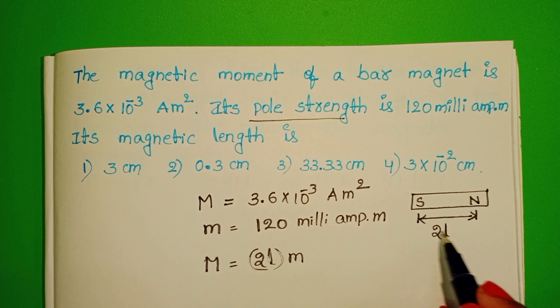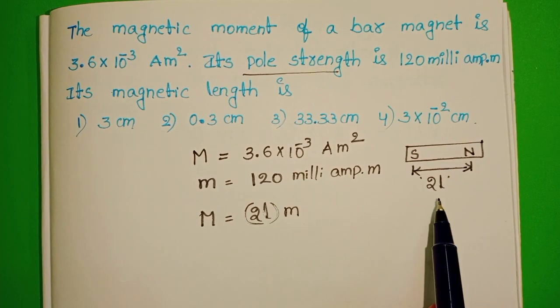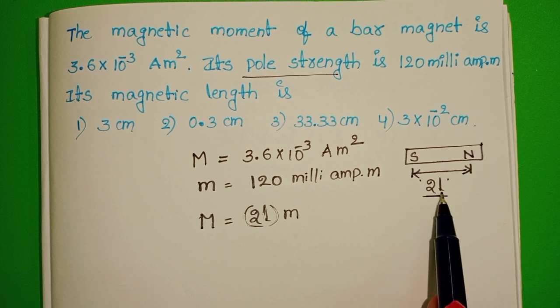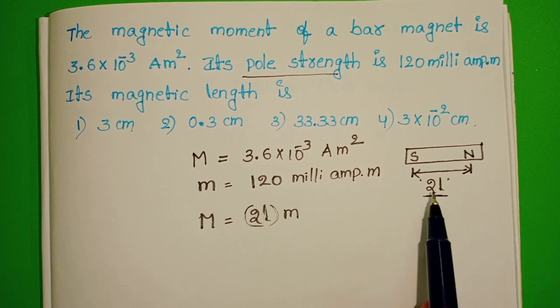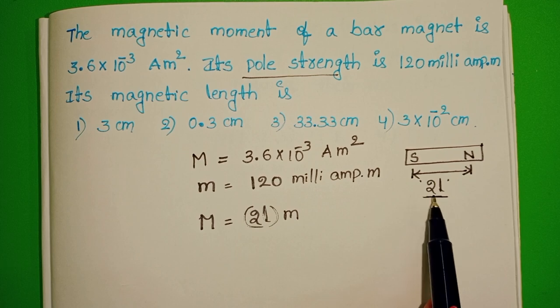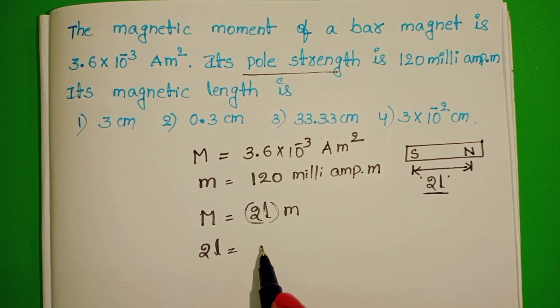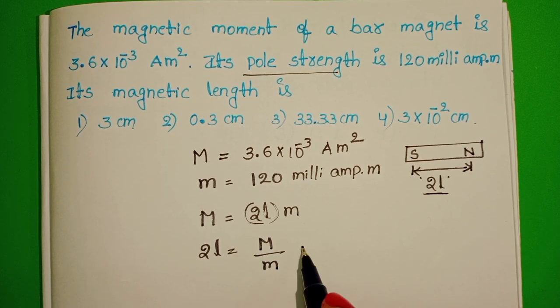Magnetic length is denoted with 2L. For simplification purposes only, we denote magnetic length with 2L, not with L. So remember, magnetic length equals 2L. From this, 2L equals magnetic moment by pole strength.